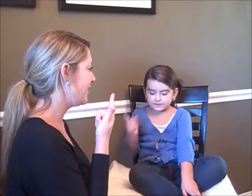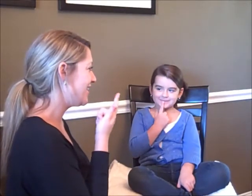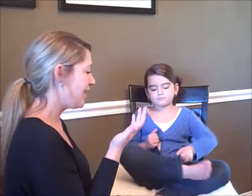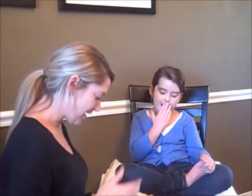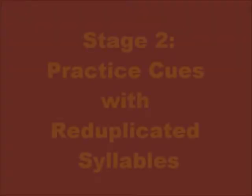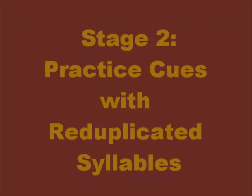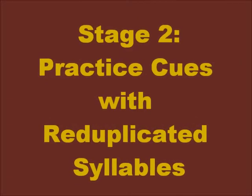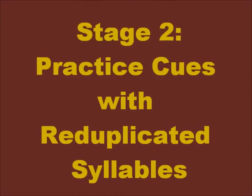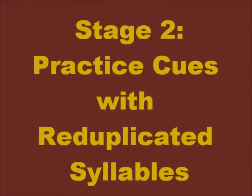What about t? Good. Ha! Ha! Good. Stage 2: practice cues with reduplicated syllables. Here the consonants and vowels will remain the same.